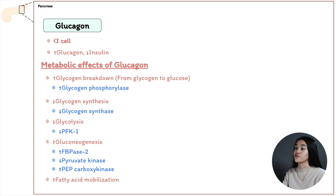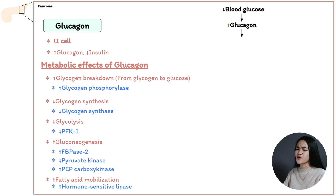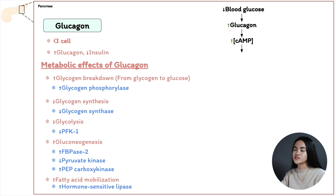The metabolic effects of glucagon involve cyclic AMP-dependent protein phosphorylation via G protein cascades. When blood glucose drops, glucagon is secreted and binds to specific surface receptors, activating G protein signaling. Note that glucagon acts only on hepatocytes, as muscles lack glucagon receptors. This stimulates cyclic AMP production, an intracellular second messenger, which triggers protein kinase A — a cyclic AMP-dependent kinase.